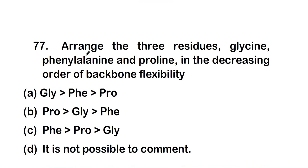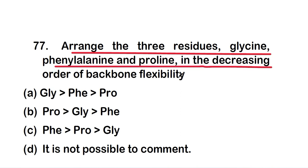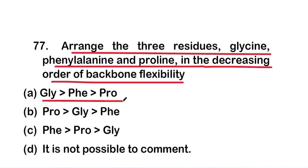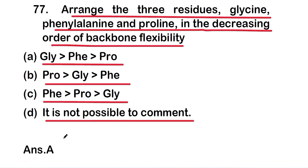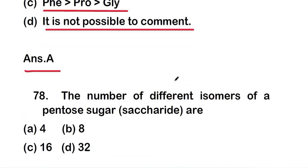Question 77: arrange the three residues glycine, phenylalanine, and proline in decreasing order of backbone flexibility. Options: option A, glycine, phenylalanine, proline; option B, proline, glycine, phenylalanine; option C, phenylalanine, proline, glycine; or option D, it is not possible to comment. The right answer is option A — glycine, then phenylalanine, then proline.